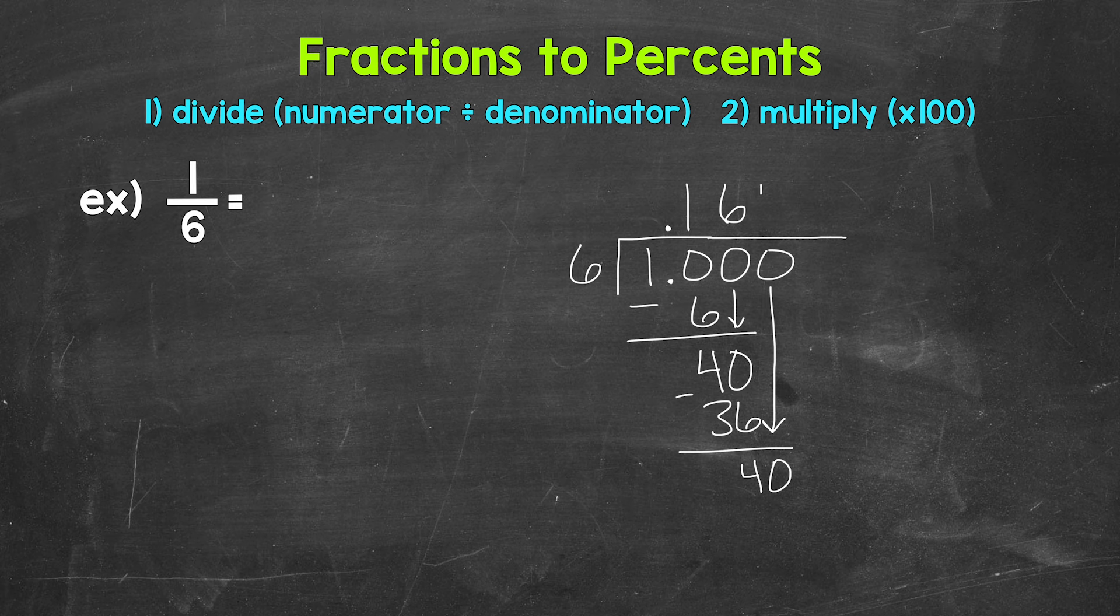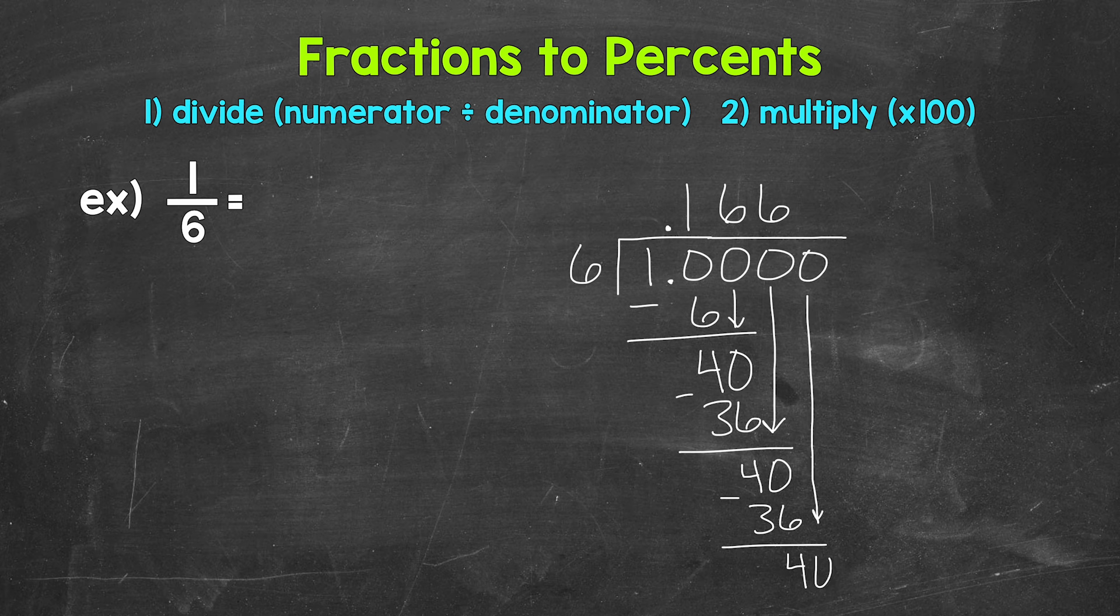So 40 divided by 6, which is 6, 6 times 6, 36, subtract 40 minus 36 is 4. We can use another zero and bring that down to continue on. But you may notice a pattern here. And this is going to continue on forever, giving us a repeating decimal. Those sixes are going to go on forever.